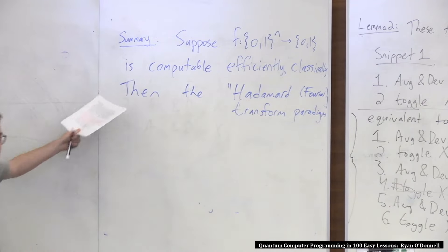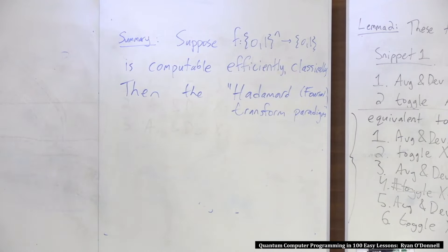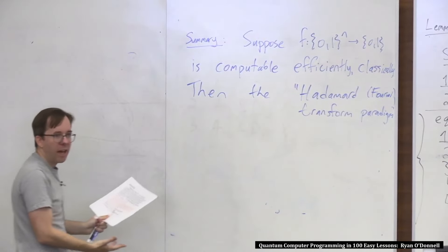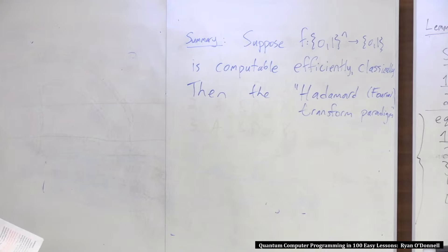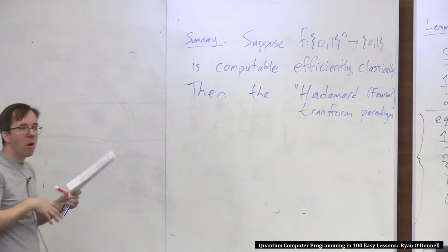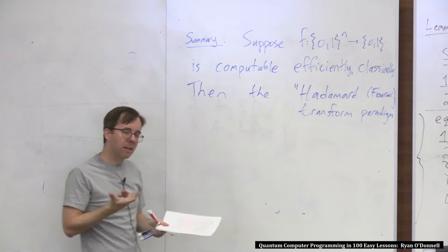What does it do? You first take the classical code for computing f, you convert it to quantum code. It's a one-bit output, so you convert it to the form 'if f then minus.' Then you do all these quantum instructions where you first prepare the uniform superposition, then do 'if f then minus,' and you get all the plus or minus 1 truth table of f loaded into the 2^n amplitudes of your n qubits. Then you do the Hadamard transform — average and deviation on all the qubits — and now the 2^n amplitudes encode the correlation between your function f and every possible bit-masked XOR function.